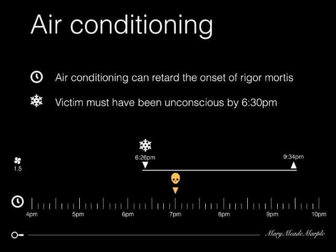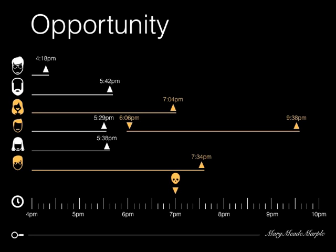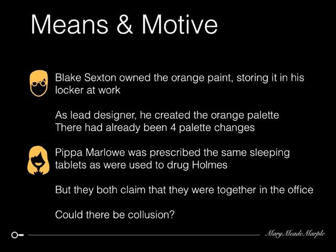This suggests Shirley must have been unconscious by at least 6:30, so we have to look at opportunity again. I'm not off the hook, but at least I've got company — Pippa and Blake. Now, we all knew the orange paint was in the office because Blake had not stopped going on about it — how hard it was to find, what a lovely orange it was, how it inspired the right colour for the Whimsy Media logo. Similarly, we knew someone had stolen sleeping pills from Pippa Marlow's handbag. Could Blake have stolen the tablets? Pippa says he was in the studio with her all evening, but it turns out this meeting room was booked under Pippa's name.